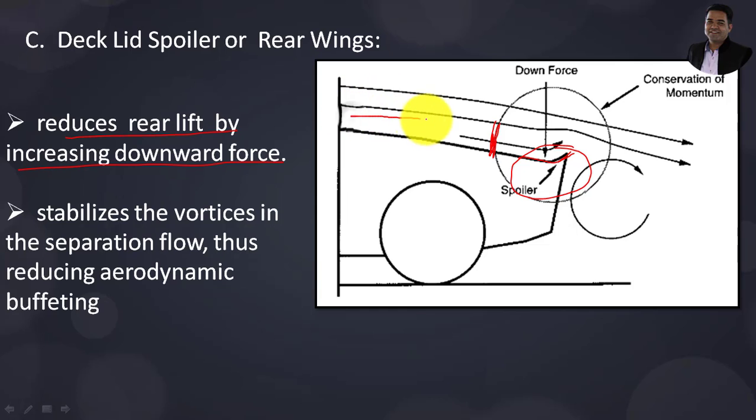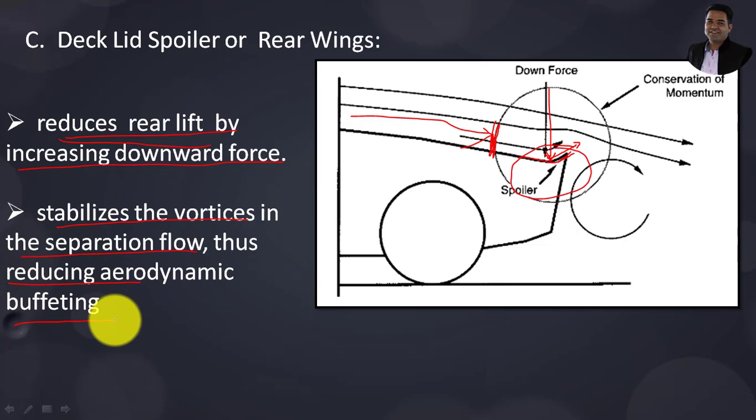The upcoming airflow strikes at this point and deflects upward. When it strikes, it increases downward forces, reducing rear lift. It stabilizes vortices in the separation flow, thus reducing aerodynamic buffeting.